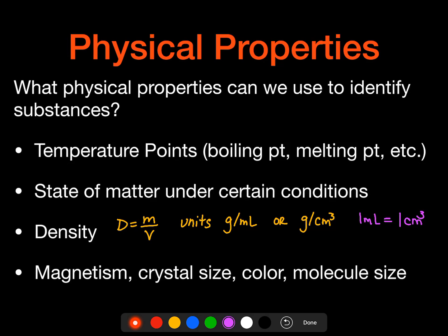The last ones, I just kind of threw some other things in there: magnetism, crystal structure, color, and molecular size. I know they always say color is not a good one, but I will tell you, I think we use it a lot. We have to be very careful with color sometimes, but sometimes color will indicate quite a bit to us.